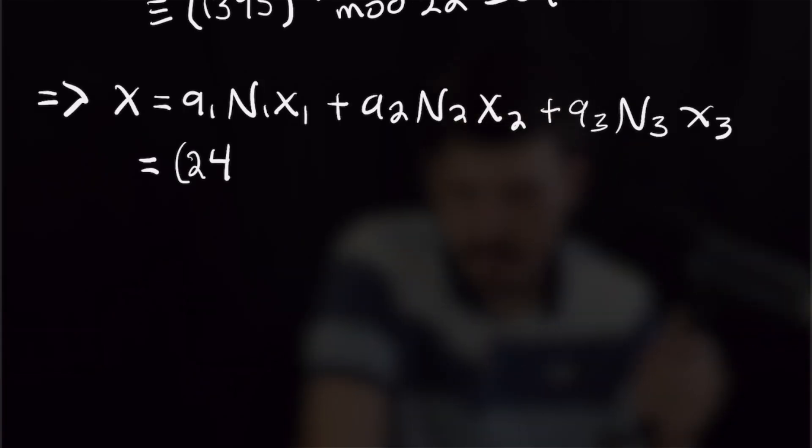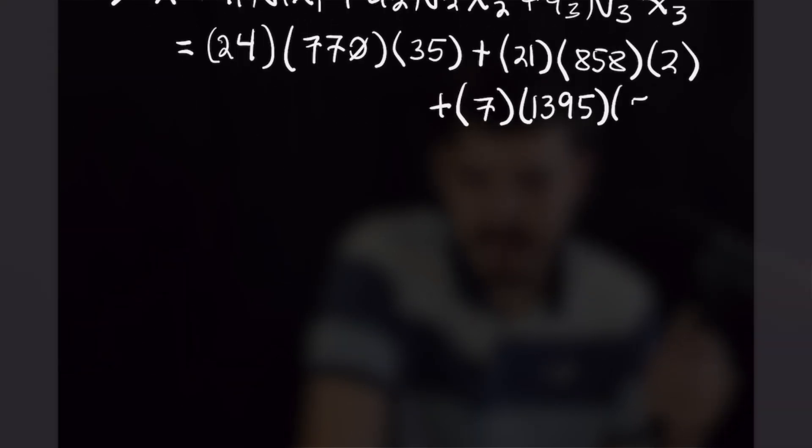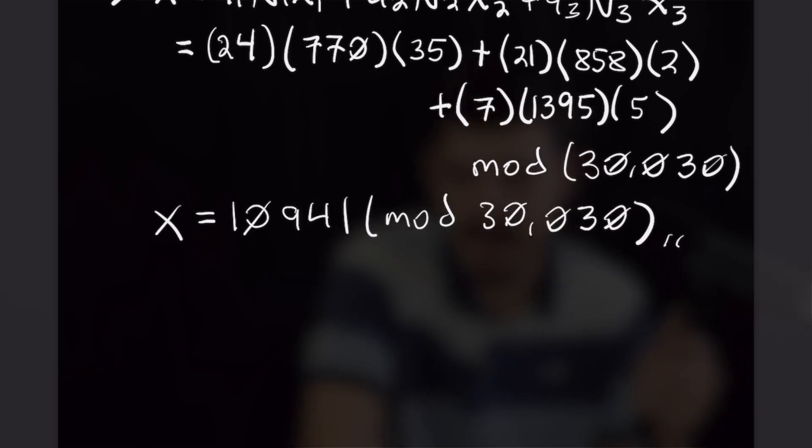Then we can plug those into the equation we used for CRT earlier to find the value for x and then reduce mod 30,030. And when you multiply all that out and reduce mod 30,030, you will find that x is 10,941 mod 30,030. And that finishes this problem off.